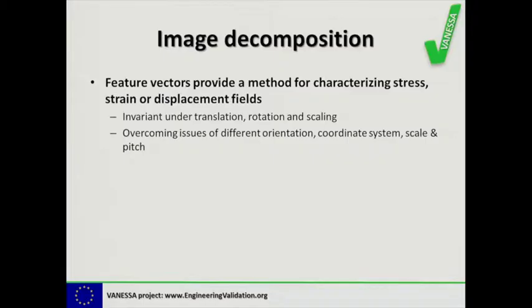We treat maps of stress, strain, or displacement as an image and decompose them using a set of known polynomials into a set of coefficients that form the feature vector. The advantage is that if we choose an appropriate set of normalized orthogonal polynomials, the result is invariant to translation, rotation, and scaling. That allows us to overcome issues associated with comparing different data sets that are viewed from a different orientation, have a different coordinate system or scale, or have a different picture of data.